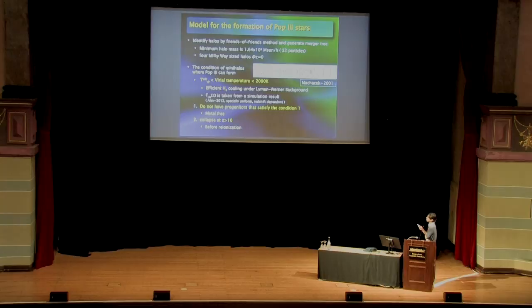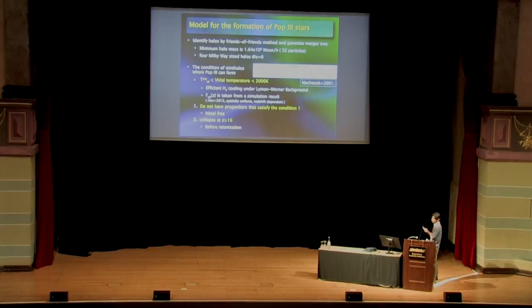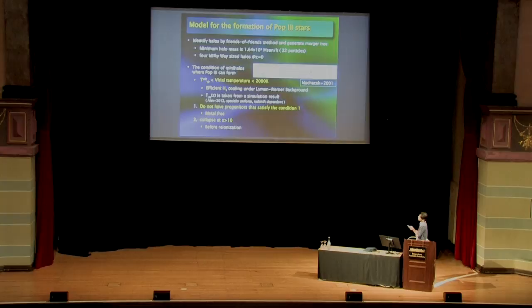From the cosmological N-body simulations, we identified mini-halos and halos by the friends-of-friends method and generated merger trees. The minimum halo mass is 1.6×10⁵ solar masses, corresponding to 32 simulation dark matter particles. We identified four Milky Way-sized halos at redshift zero. On these merger trees, we model the formation of low-mass Population 3 stars.